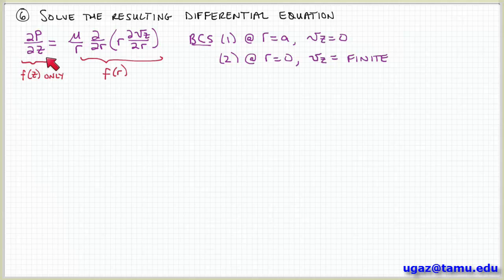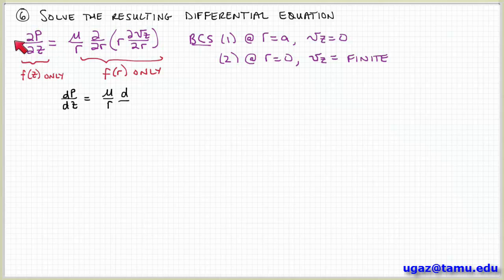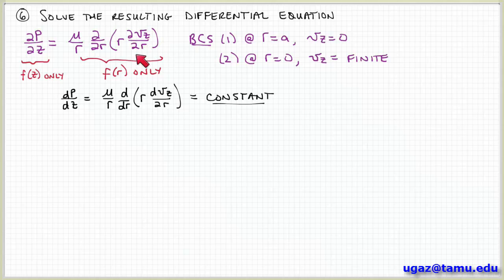And the first thing that I want to point out is that the way I've written it, this quantity on the left-hand side, dp dz, is a function of z only. And this quantity on the right-hand side involves terms that are only functions of r. So the only way I can have a function of z only equal to a function of r only, always, is if they're both equal to a constant.